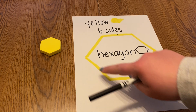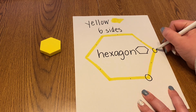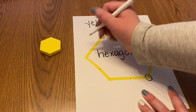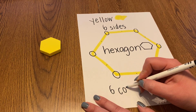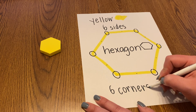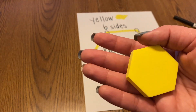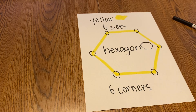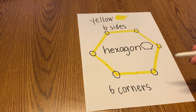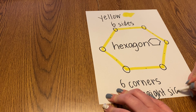What are these things called where the sides connect? Do you know? Those are called corners. So we can say it has one, two, three, four, five, six corners. And now really look at it closely — I'll pick it up for you. Are the sides straight or curved like a circle? They are straight.